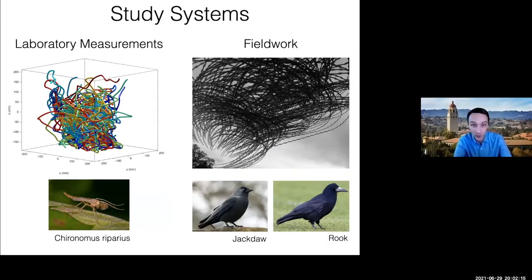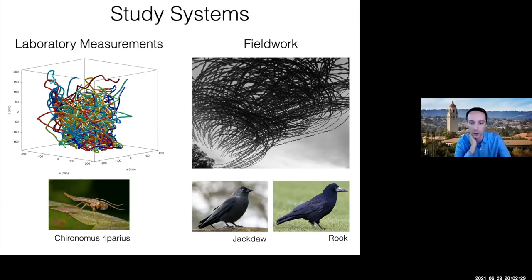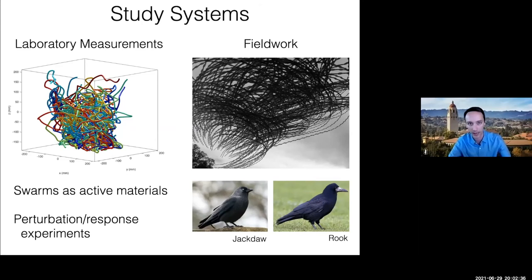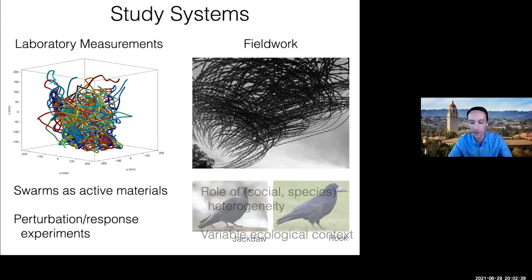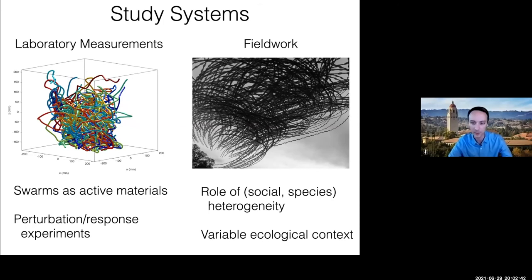In my lab we work with two study systems. In the laboratory we work with insects — chironomid midges — small enough to keep a colony in the lab and do all sorts of experiments. We've also been moving into field work over the past five years with corvids — flocks of jackdaws and rooks. In the lab, we're interested in thinking about swarms as active materials where we can do real experiments. In the field, we're interested in exploring differences in the ecological context as our manipulation tool.